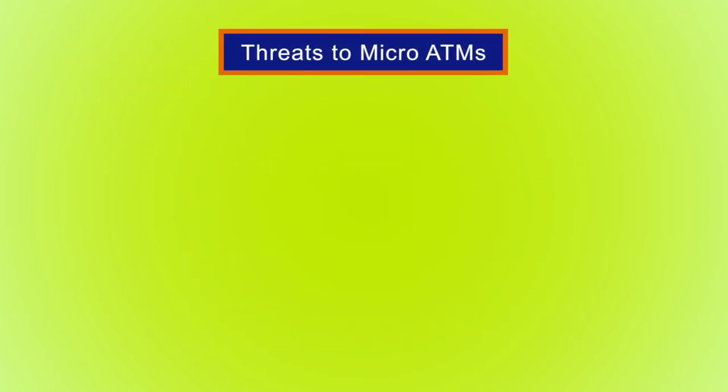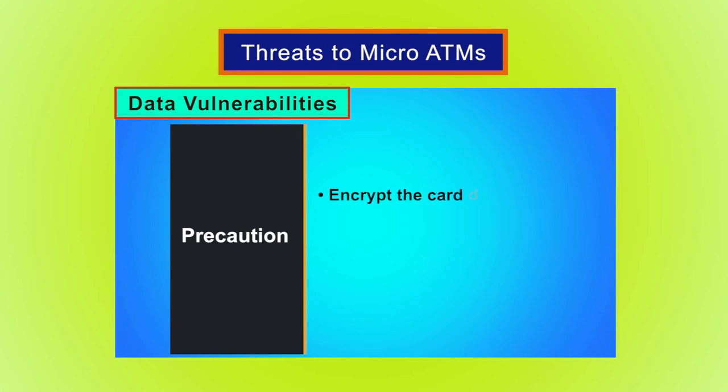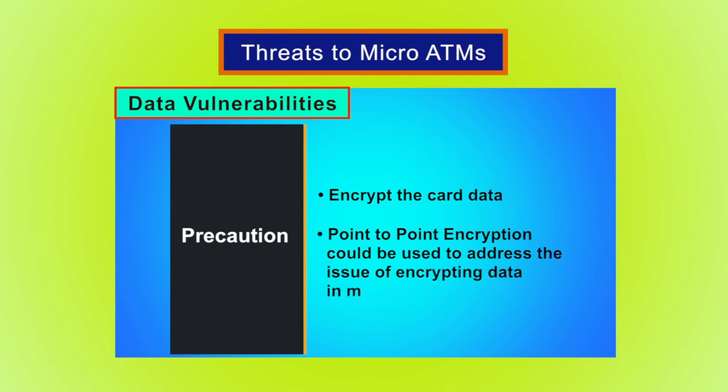Threats to MicroATMs: Data Vulnerabilities. With respect to POS data vulnerabilities, there are three specific areas that should be given attention including data in memory, data in transit and data at rest. Data in memory is when the card tracked data is brought into the system at the POS system via point of interface or some other input device. Data in memory is nearly impossible to defend if an attacker has access to the POS system. Traditionally, data input into the POS system was in memory in clear text, which allowed attackers' memory scrappers to be very successful. The way to minimize this risk is by encrypting the card data as soon as possible and keeping it encrypted throughout its life within the system. Point-to-point encryption could be used to address the issue of encrypting data in memory.